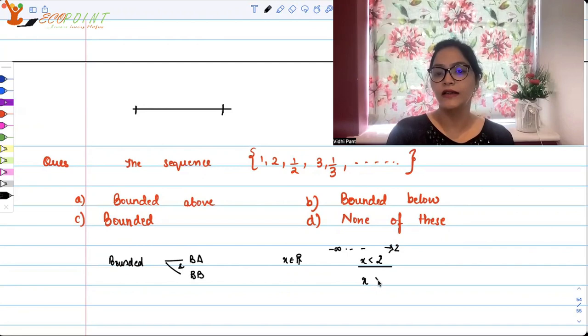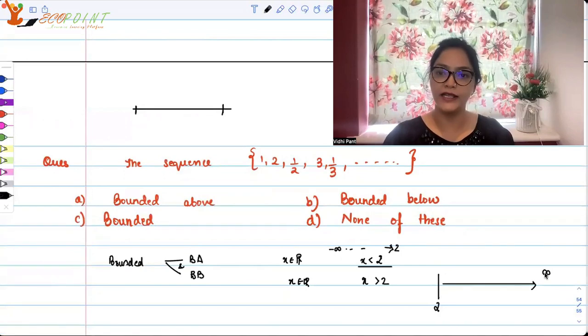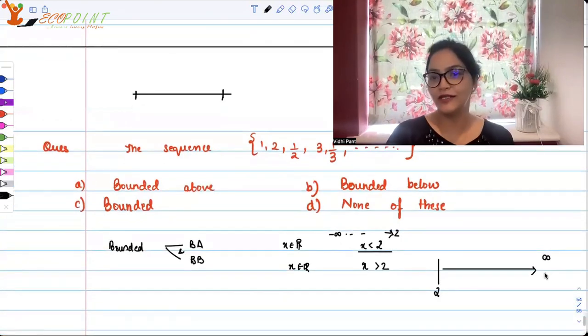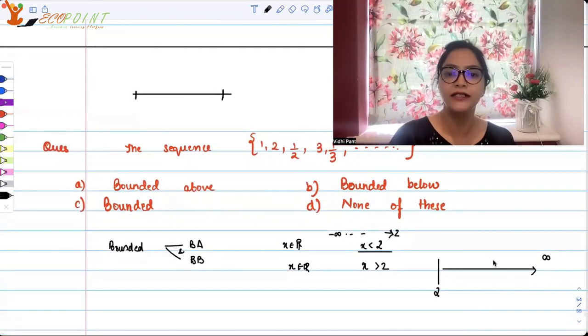But a set like x is greater than two, the set of all real numbers starting from two, two and above everything. Now that means there is a wall. Two is that wall. You are involving only the numbers which are more than that. So you have a wall in the beginning. So this is bounded below, but it's not bounded above. Now giving you this recap, let's talk about the given sequence.